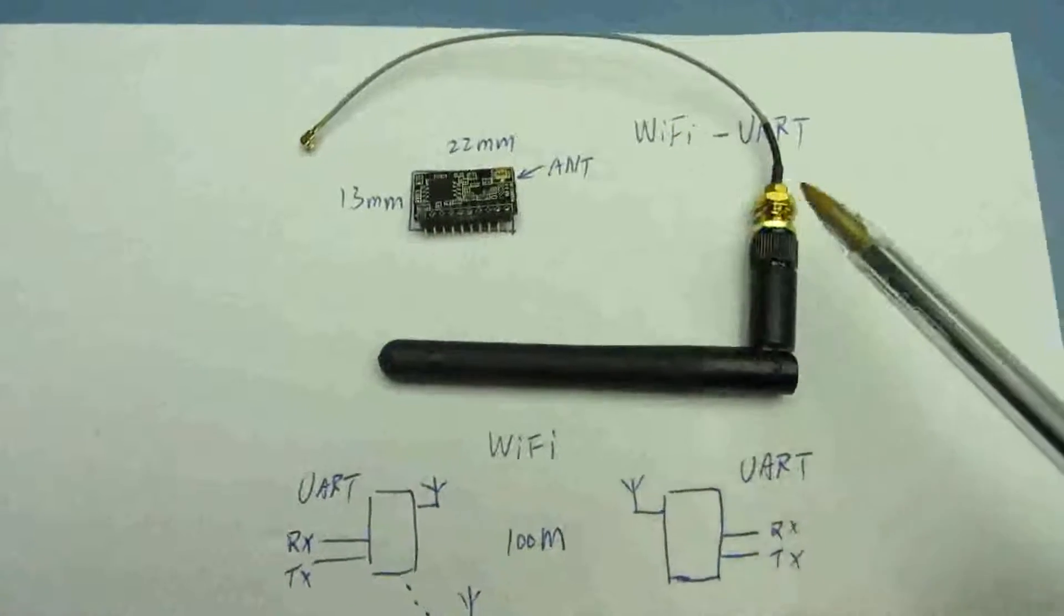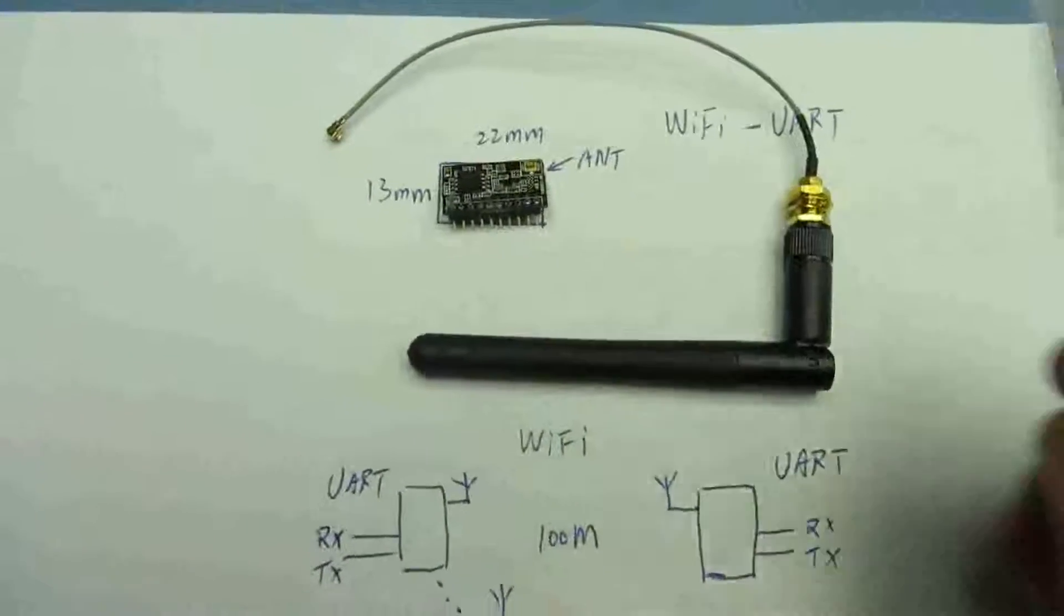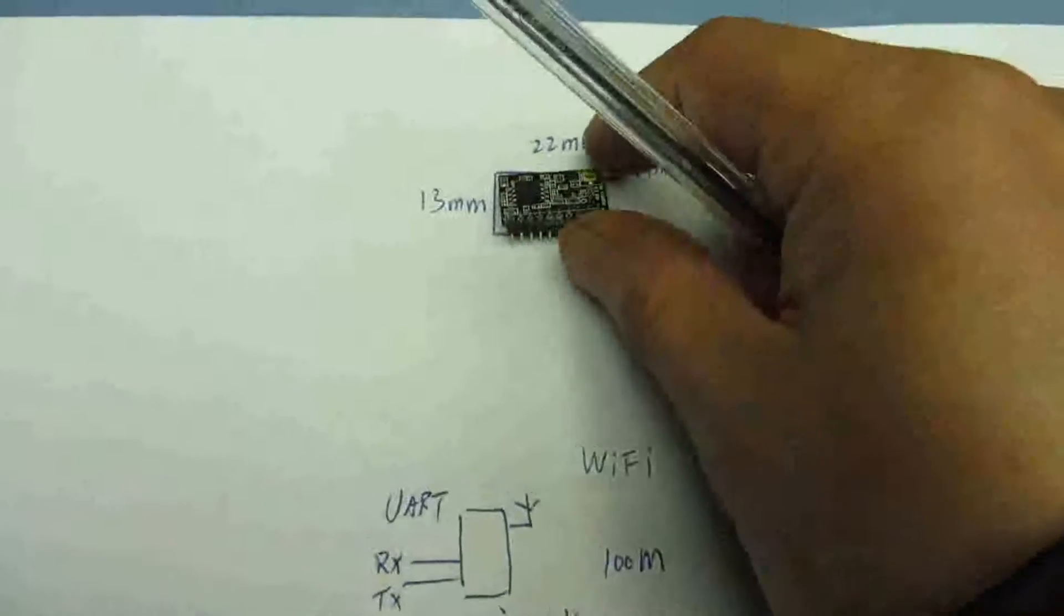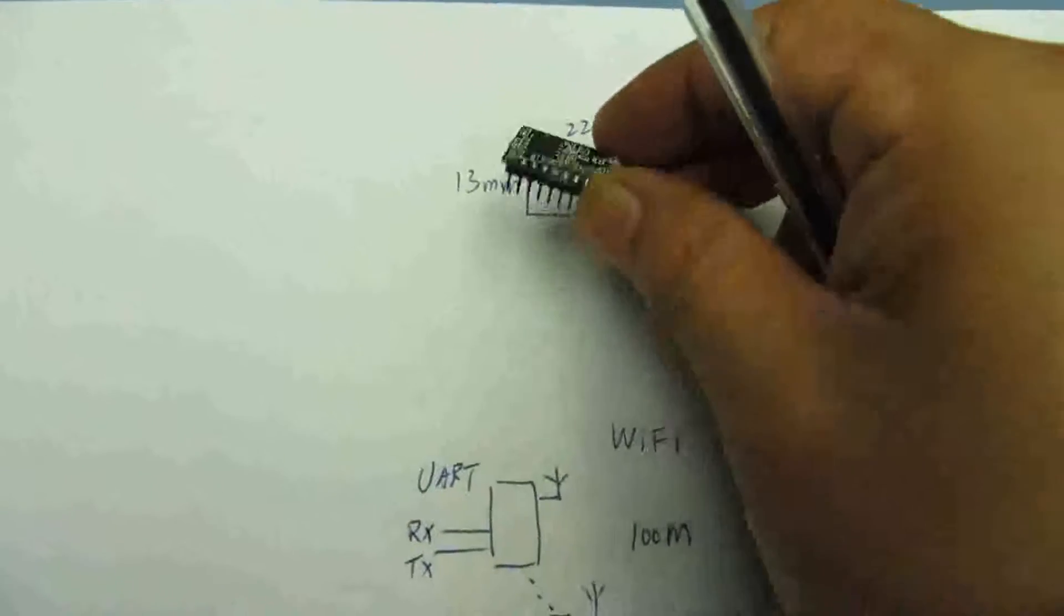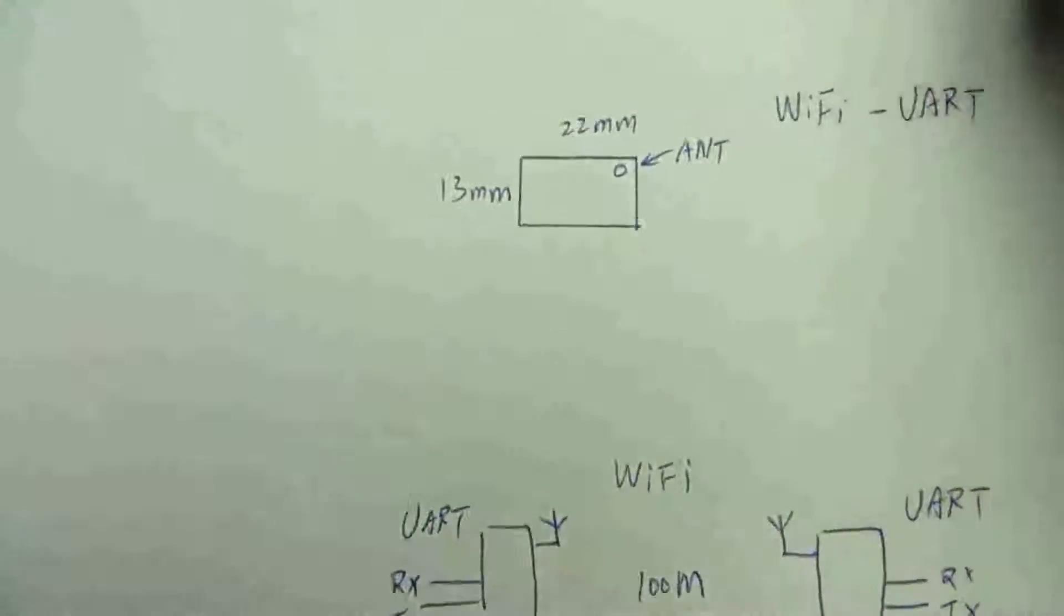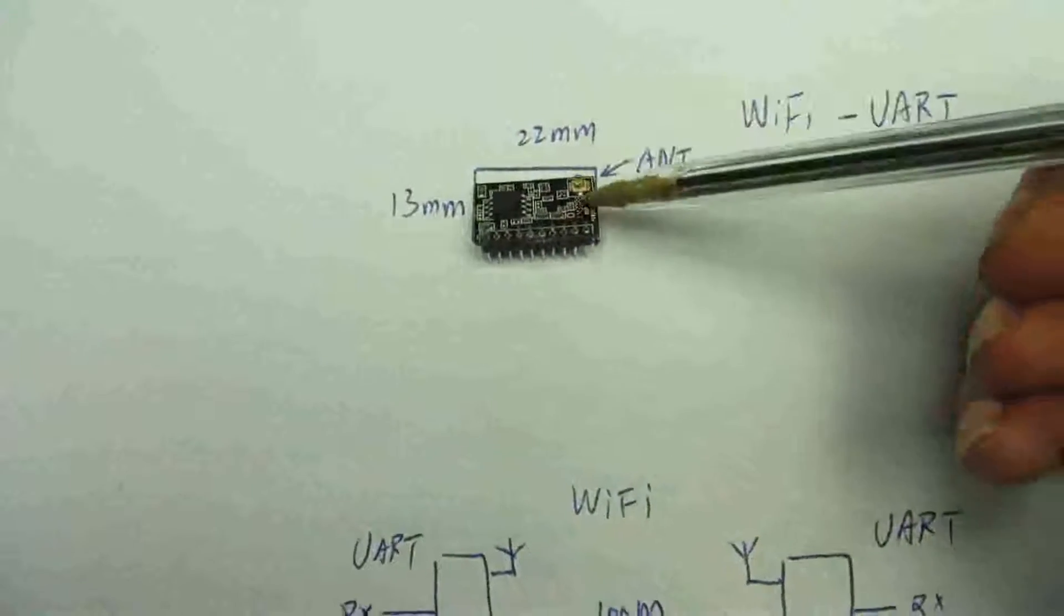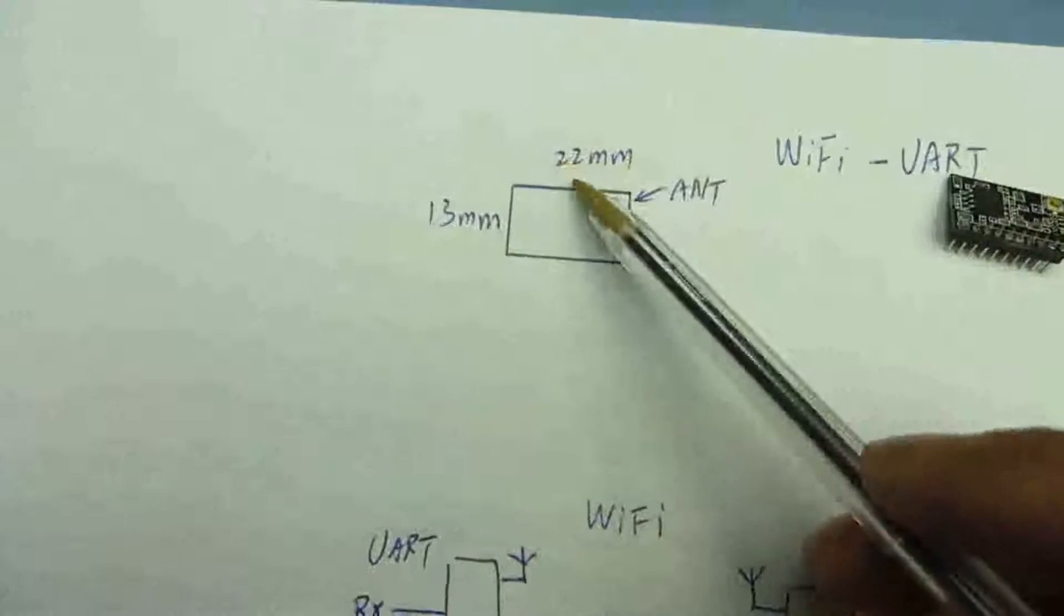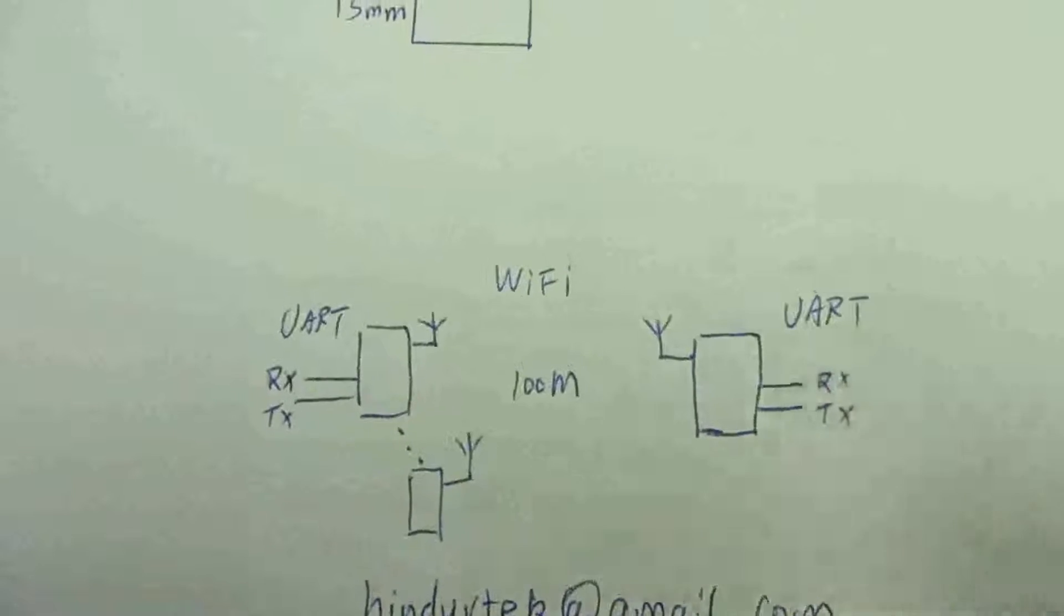This module is a WiFi to UART transparent wireless module. Here is the antenna. The module is very tiny and small. Here is the back. The module size is 22 millimeter by 30 millimeter. Here is the antenna connector where you connect your antenna. Here is a network diagram showing how to use this module.